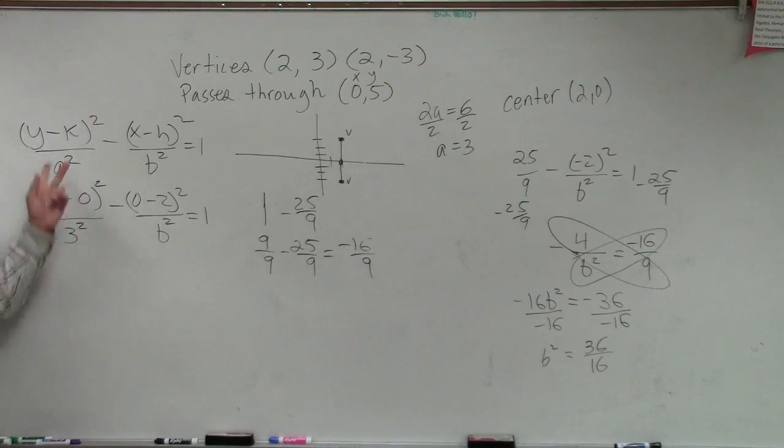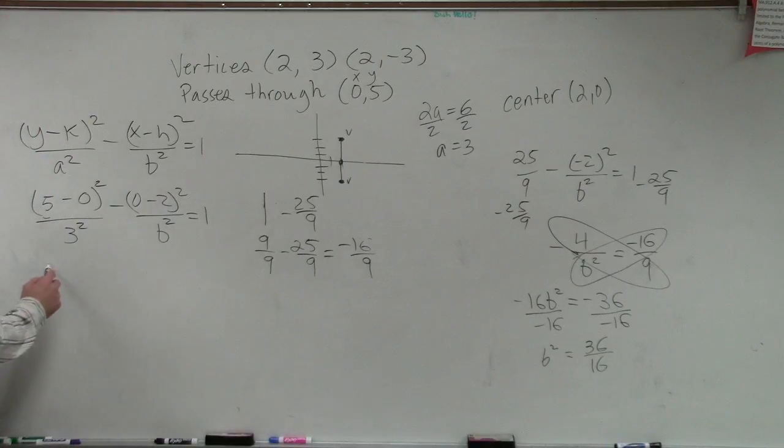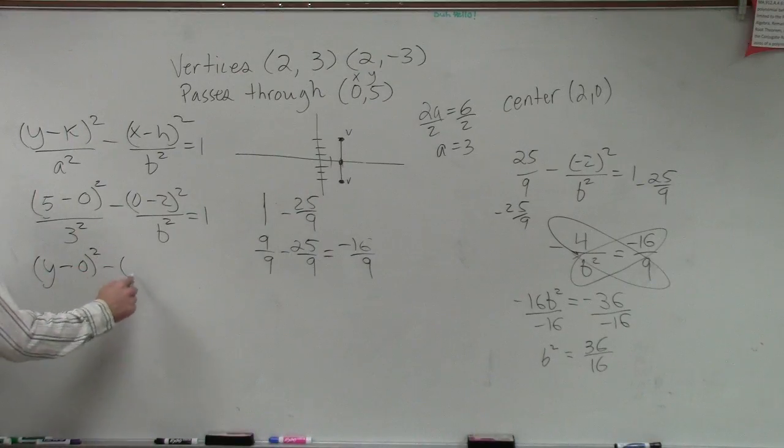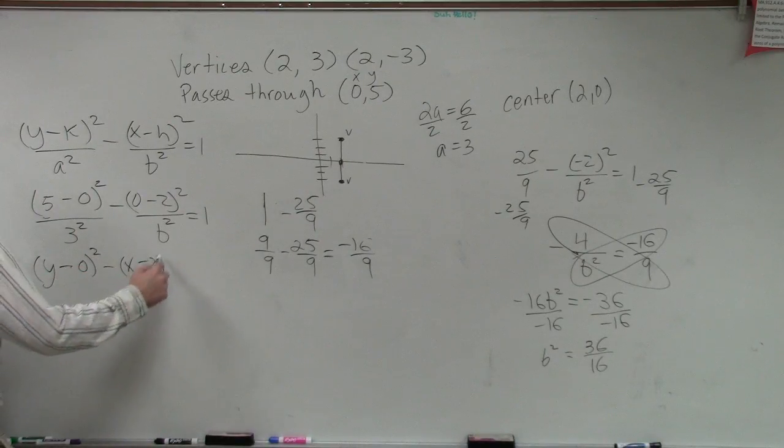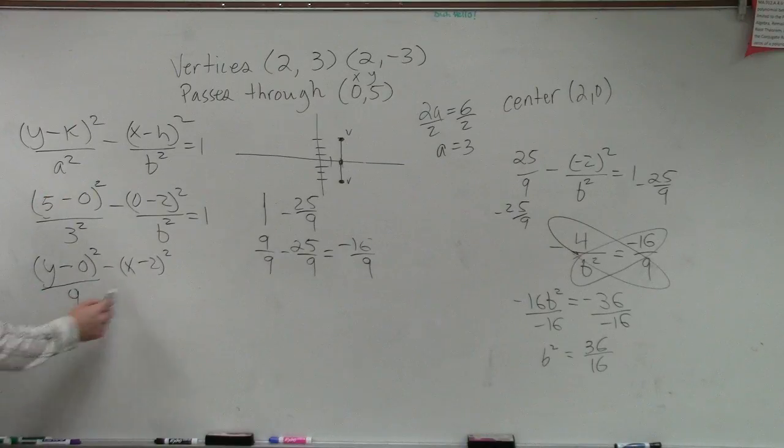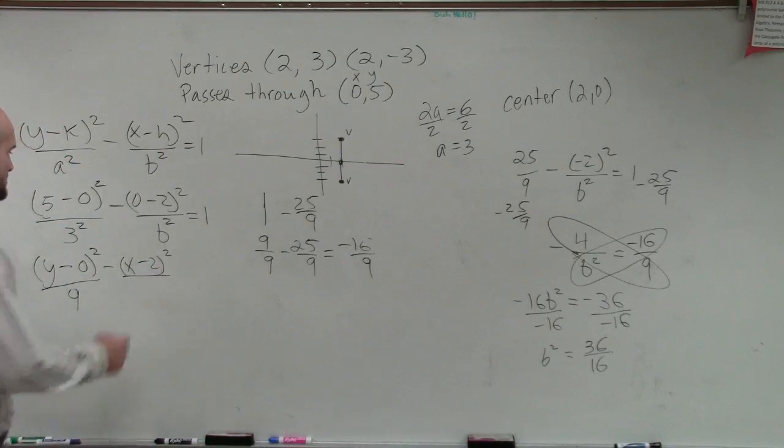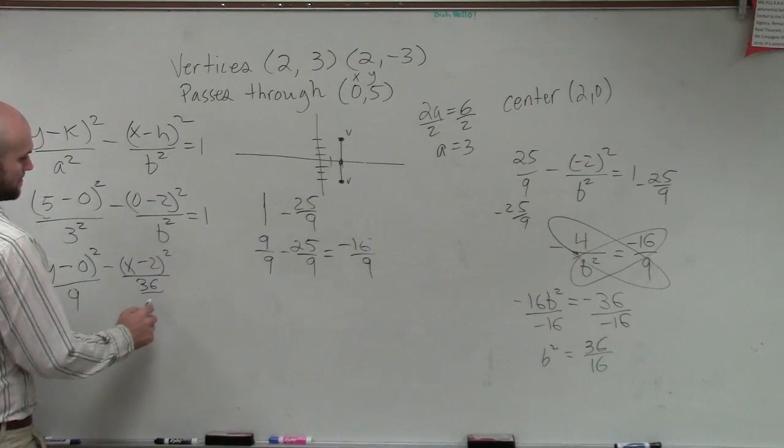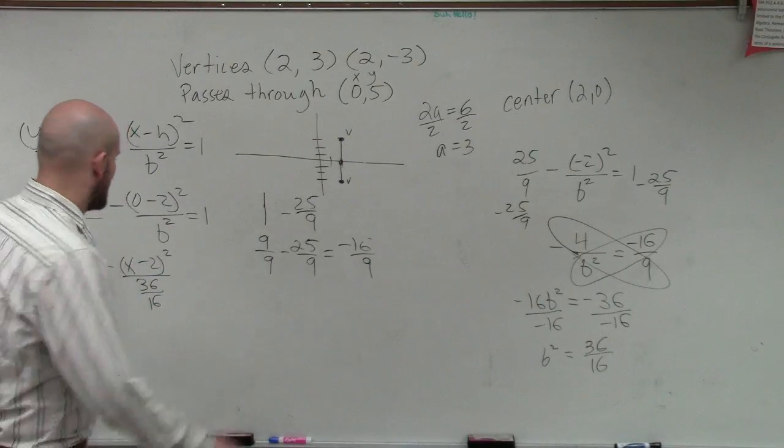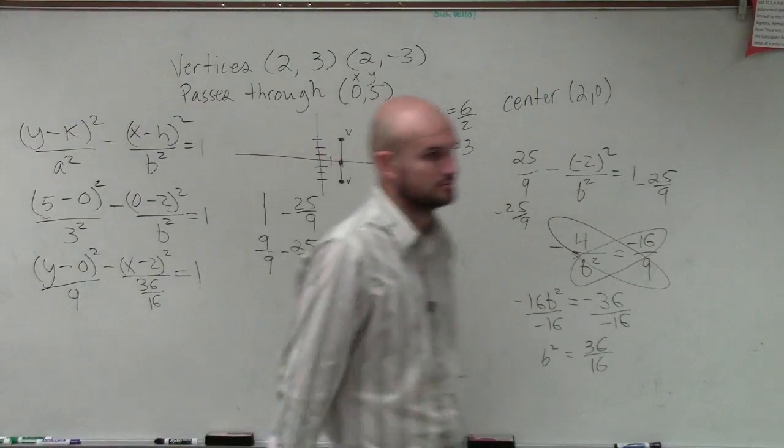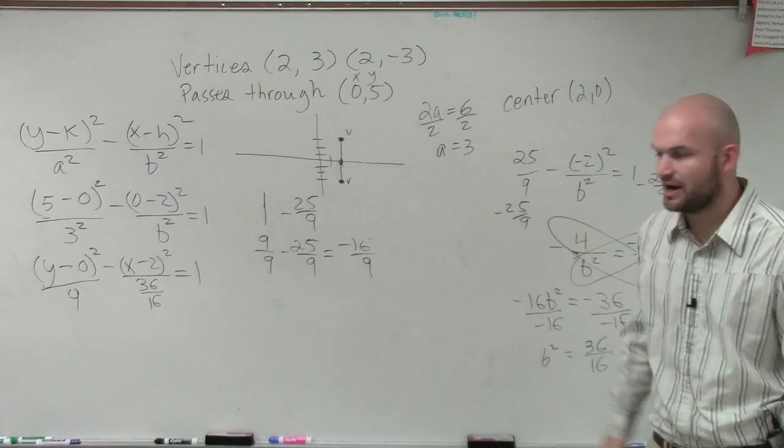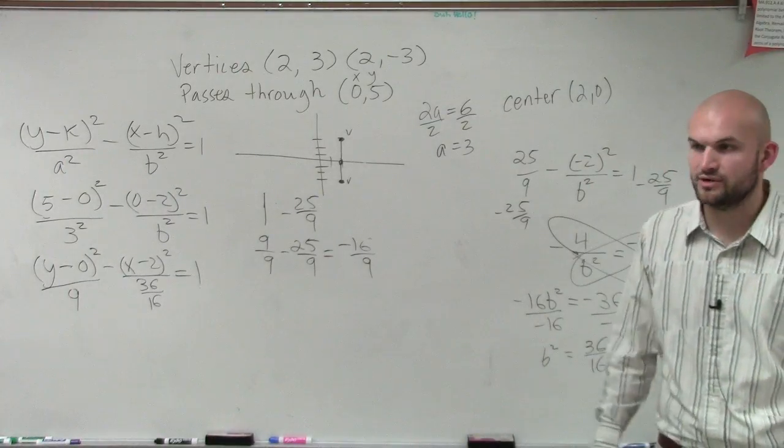So now, do we know what b² is? Do we know what a² is? And we do know what the center is. Yeah. So let's write our equation. So now we have (y-0)²/9 - (x-2)²/(36/16) = 1. And we could simplify, you could reduce that down. But I'll just keep it in there so you guys can see where it's accurate.